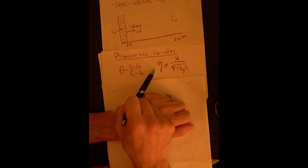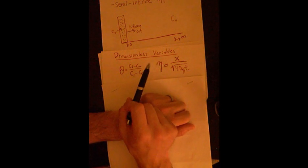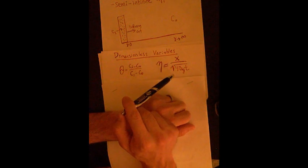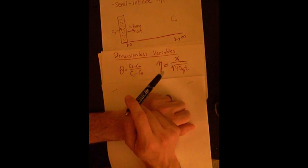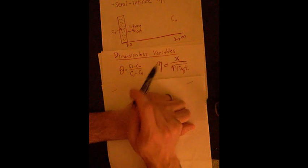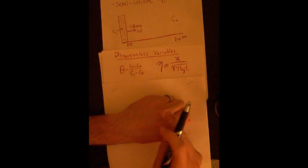Eta is showing you the dimensionless position, and the dimensionless position is equal to x divided by the square root of 4 dij t, and I've gone through how we were able to figure this out in class, as well as in the book if you want to look that back up.